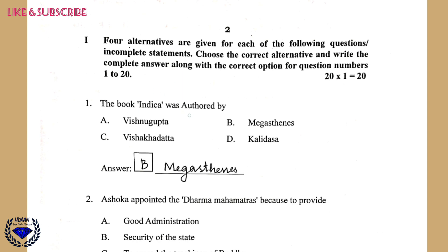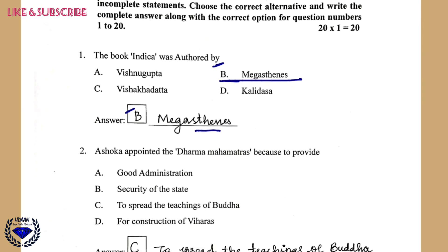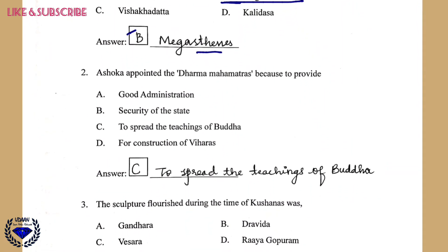Question 1: The book Indica was authored by — you should remember to write the correct letter along with the correct answer. The book Indica was written by Megasthenes. The right answer is B, Megasthenes. Question 2: Ashoka appointed the Dharma Mahamantras to — the correct answer is C, to spread the teachings of Buddhism.